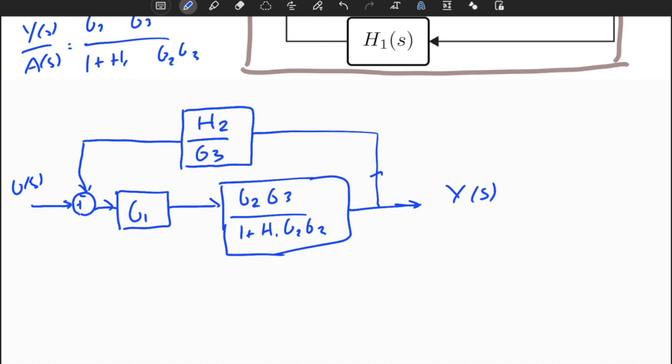For this part, it's u of s. So first of all, we don't need to separate G1 from the other parts, so what I do is I simplify it further. This will be equal to G1 G2 G3 divided by 1 plus H1 G2 and G3. I have a clean solution in the lecture, you can look at that. This is just for getting the idea.